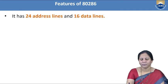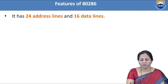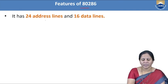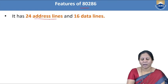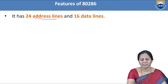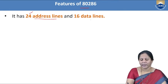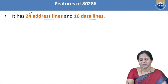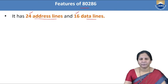Continuing with the features: the 80286 has 24 address lines, meaning the address bus is 24-bit wide, and the data bus is 16-bit wide.